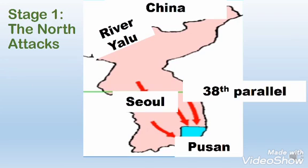We will be discussing four stages of the Korean War. The first one was the North attacks. On the 25th of June 1950, North Korean troops invaded South Korea. They crossed the 38th parallel and surrounded the capital Seoul. The South Korean army retreated to Busan.